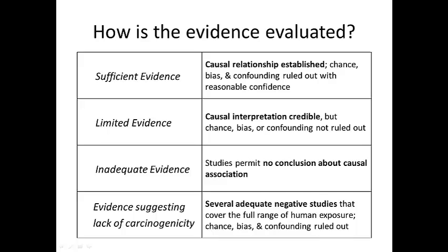In order to place something in category four, you have to have large, very large, what are called adequate negative studies — studies that are good enough and large enough to give people confidence that there really is nothing there. They also have to cover the range of exposures that people are likely to experience. So it's a pretty broad set of criteria that have to be met, making this very hard to achieve.